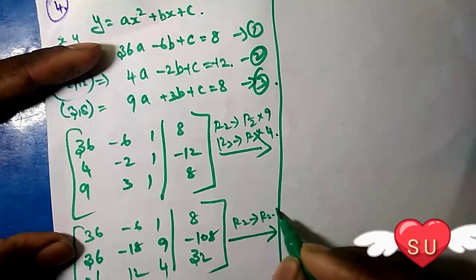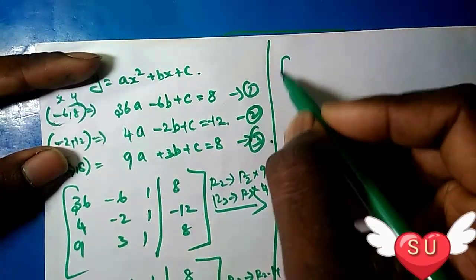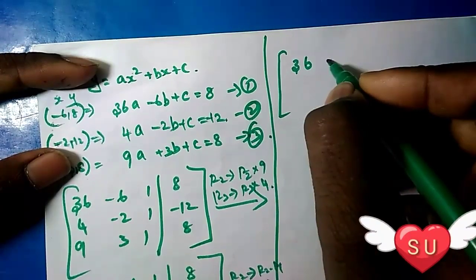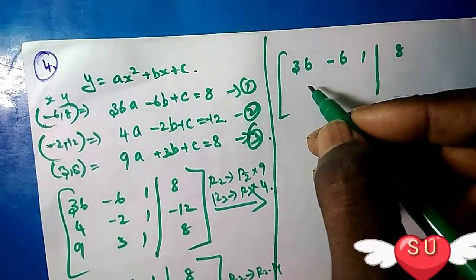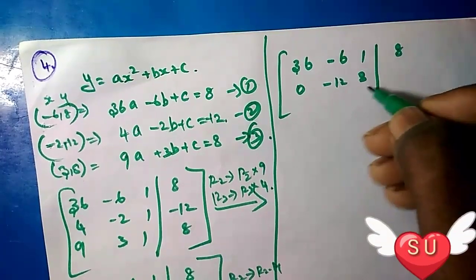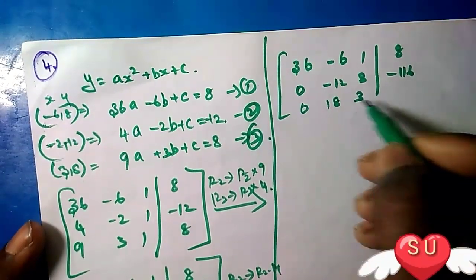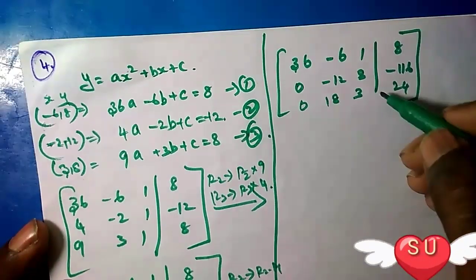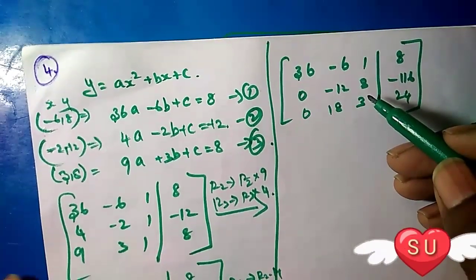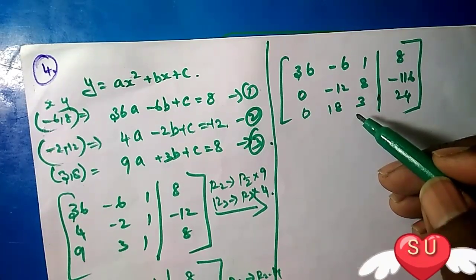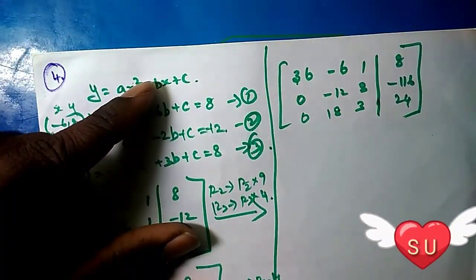Next we perform row operations. R2 minus R1 and R3 minus R1. For R2 - R1: 4 - 36 = -32, and working through we get 0, -12, 0 in row 2 with result -6. For R3 - R1 we get 0, 18, 0 with result 324.